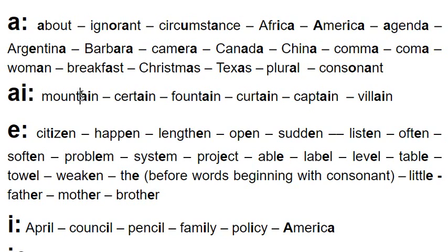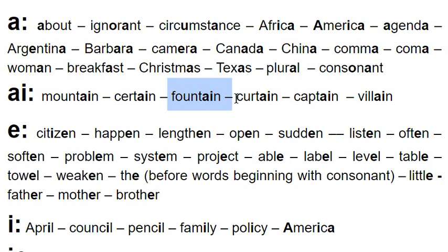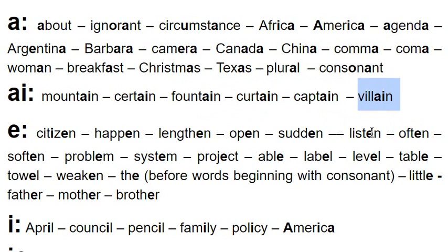Now let's take a look at the spelling A-I. Many people pronounce 'mountain' or 'mountayn' — no, it's 'mountain'. The A-I sounds like schwa. Mountain. Certain. Fountain. Curtain. Captain. Villain. Piano.